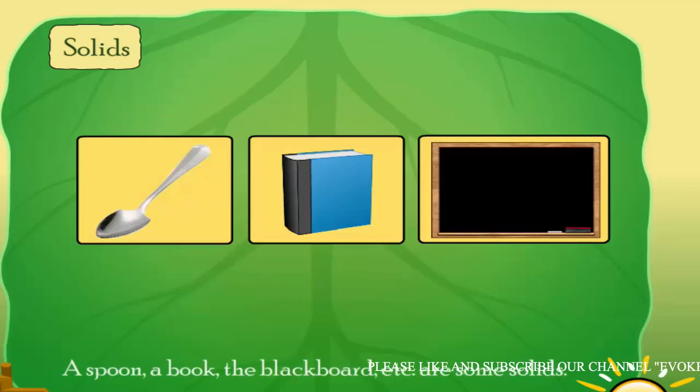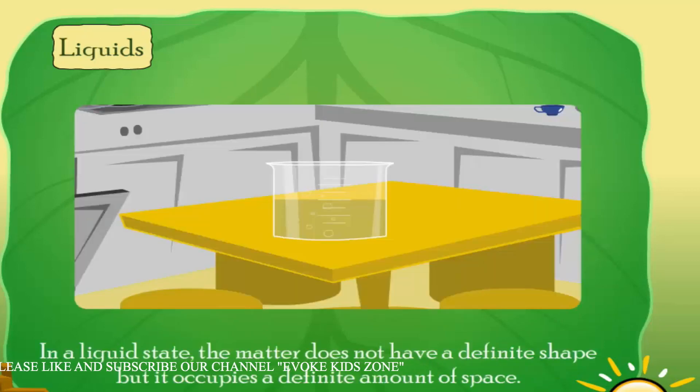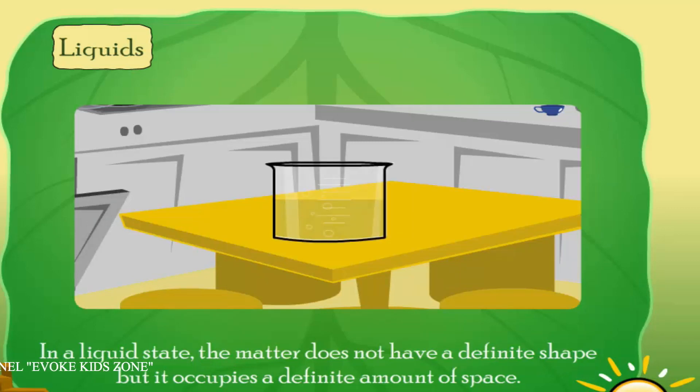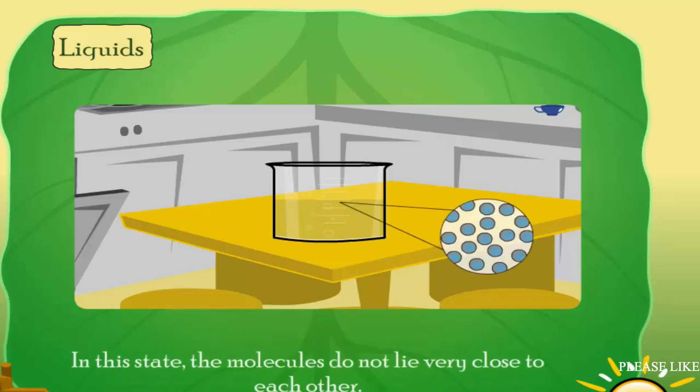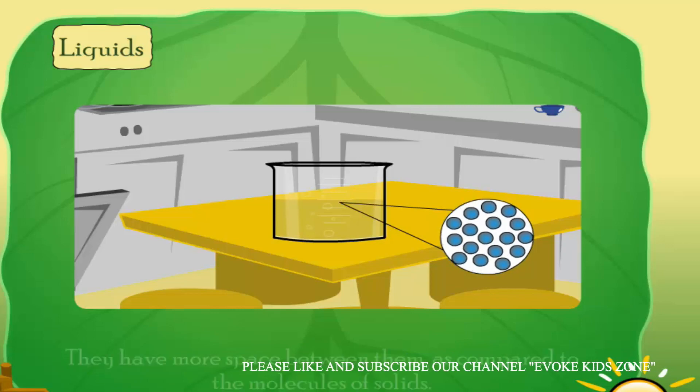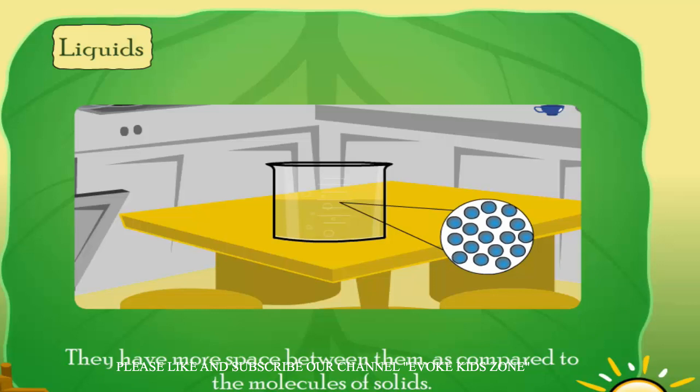In a liquid state, the matter does not have a definite shape, but it occupies a definite amount of space. In this state, the molecules do not lie very close to each other. They have more space between them.